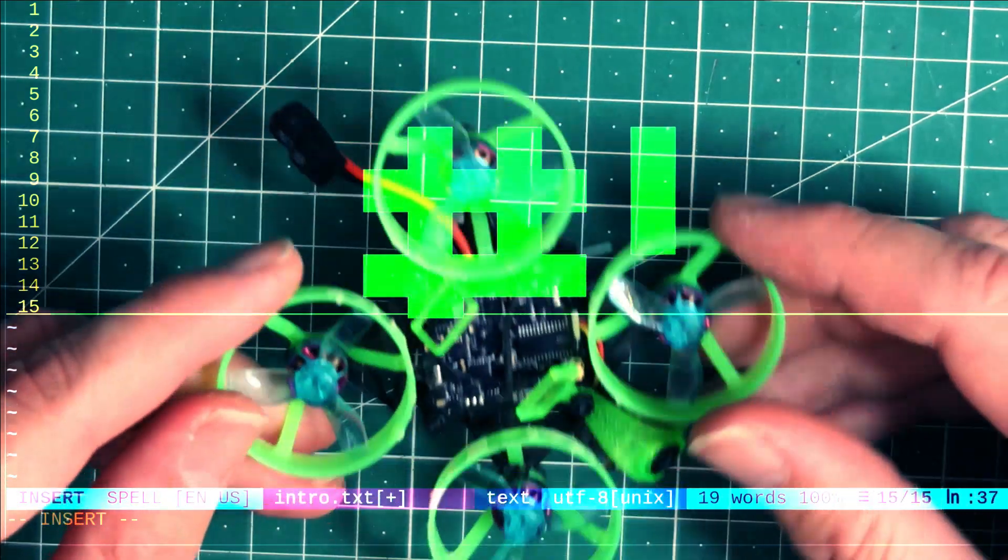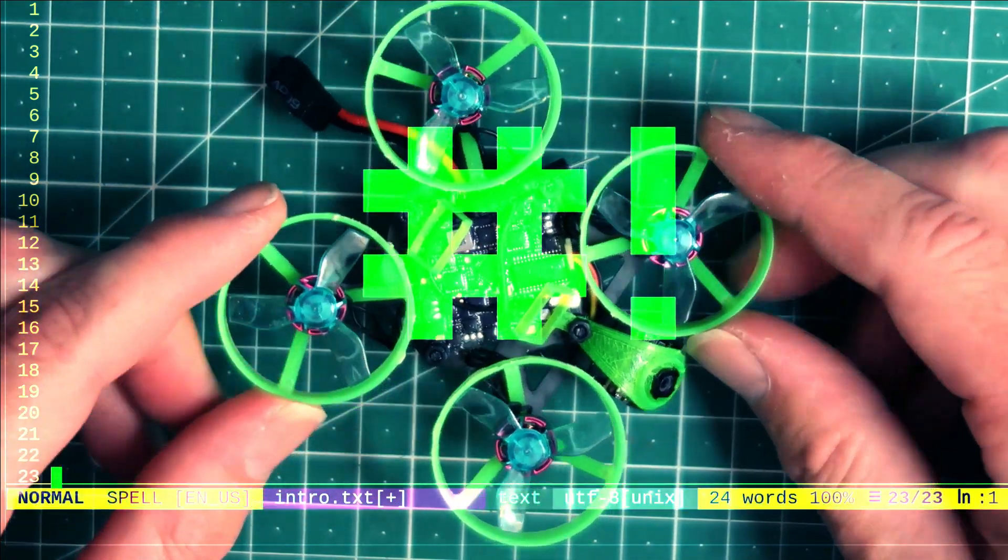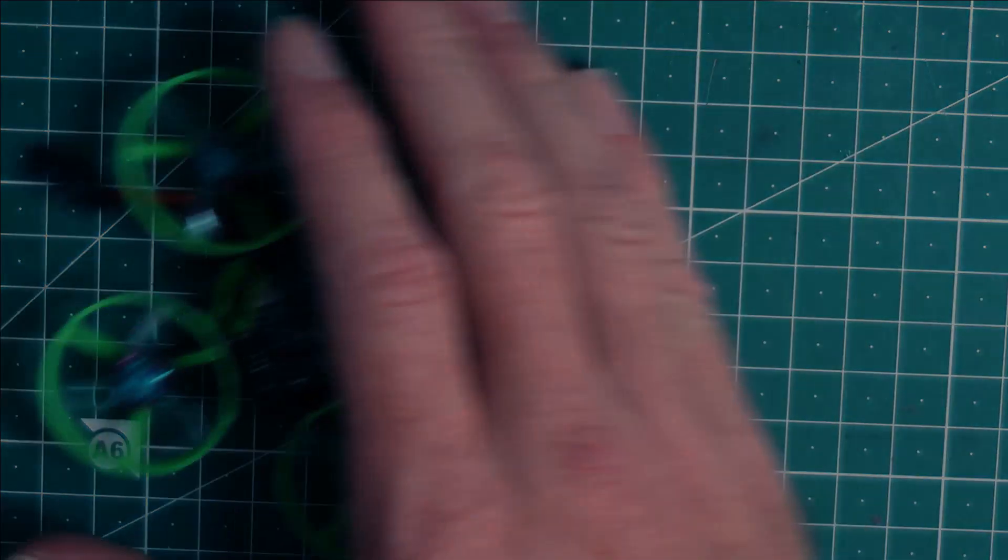Let's build a lightweight Tiny Whoop with a top loading battery, carbon fiber frame, and high KV motors.